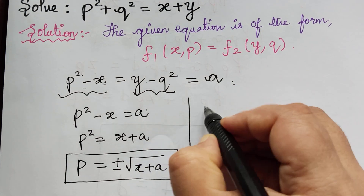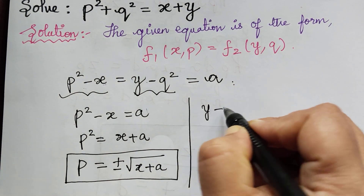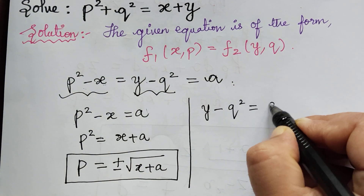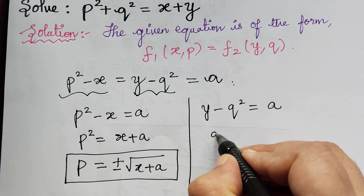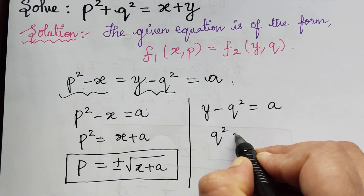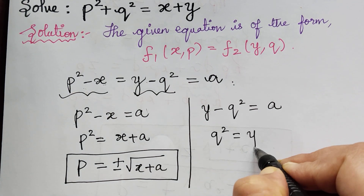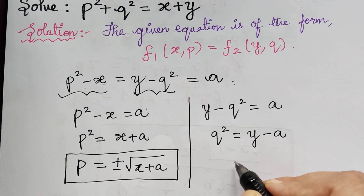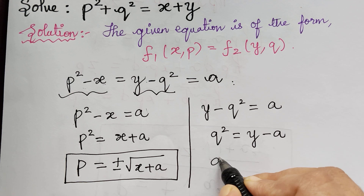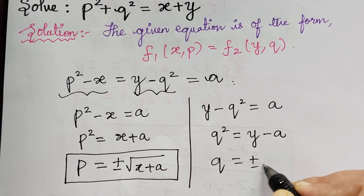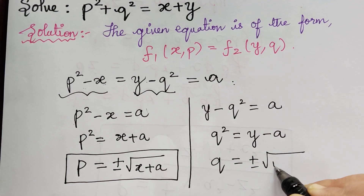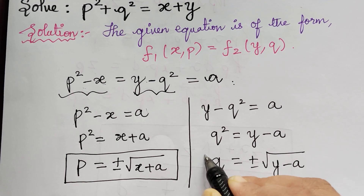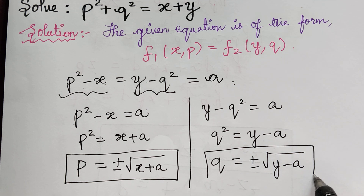In a similar way, y minus q squared will be equal to a. So from this, the value of q squared will be equal to y minus a, and so the value of q will be equal to plus or minus square root of y minus a.